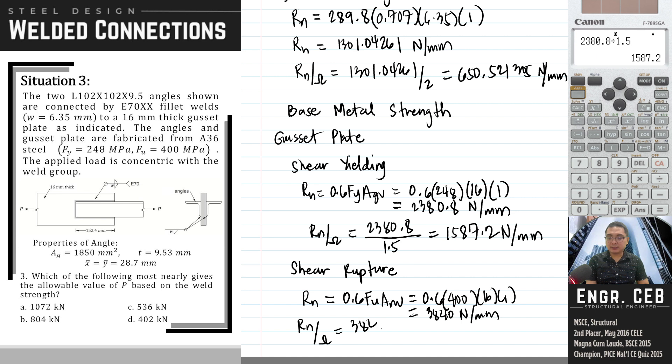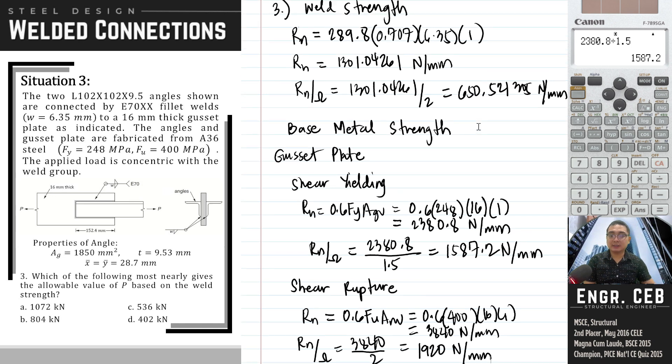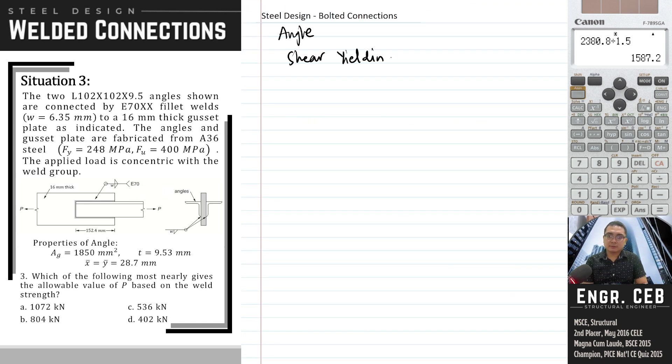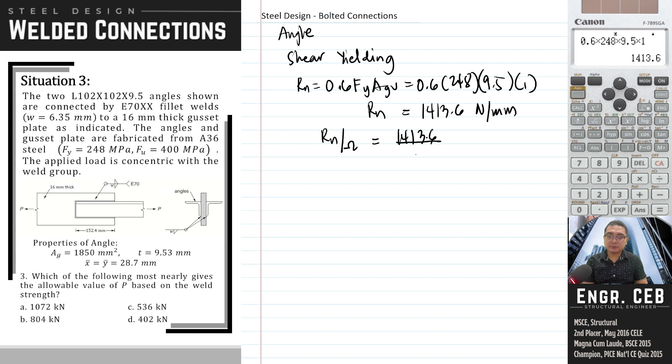Next is for the angle. Rn equals 0.6 Fy Agb, 0.6 times 248, Agb is 9.5 times 1, so 0.6 times 248 times 9.5 is 1413.6. Divide by the factor of safety for yielding over 1.5, this is 942.4 N/mm.